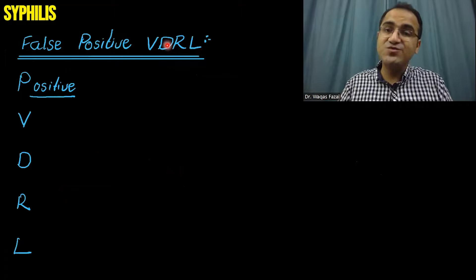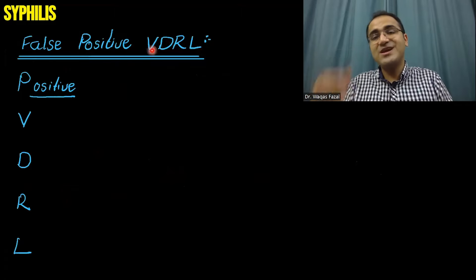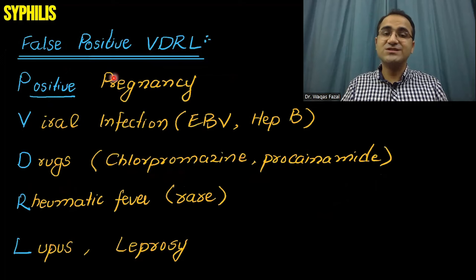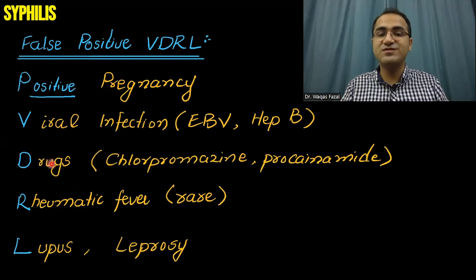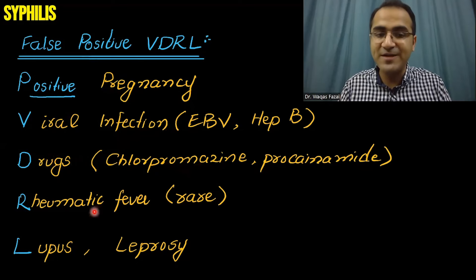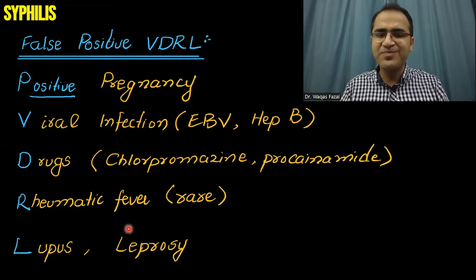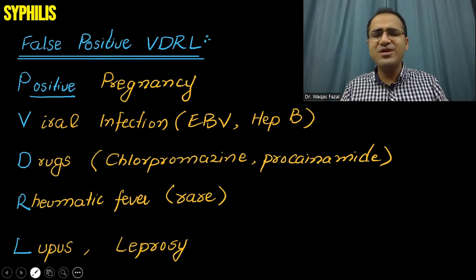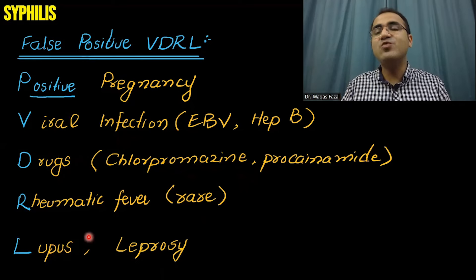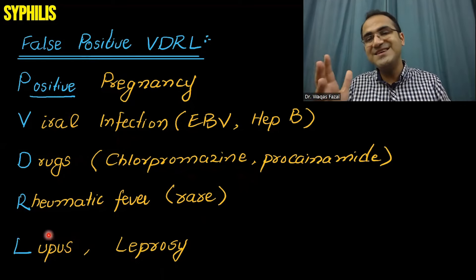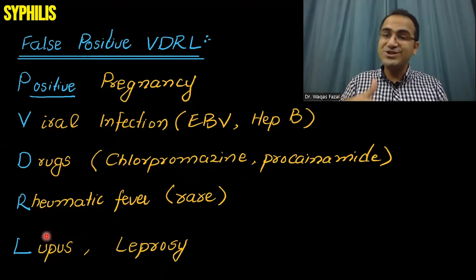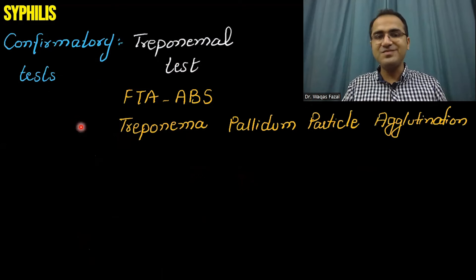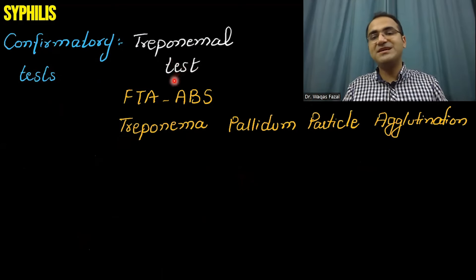Remember, VDRL — the screening test for syphilis — can also be positive in a few other conditions: pregnancy, viral infections, drugs like chlorpromazine and procainamide, rheumatic fever, lupus, and leprosy. The most commonly tested false positive is lupus — in SLE and antiphospholipid syndrome, patients usually have a positive VDRL.